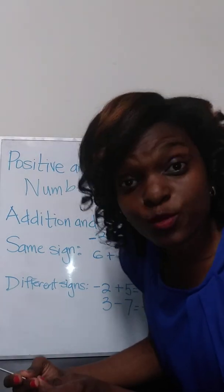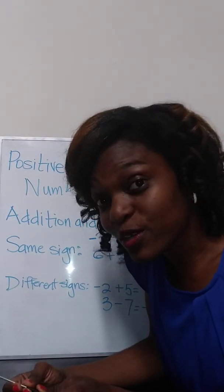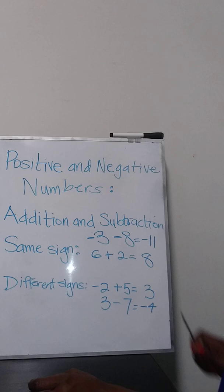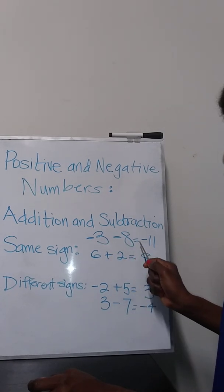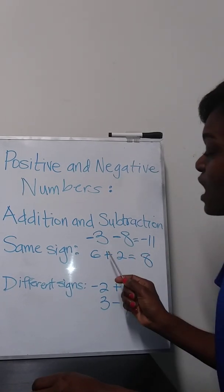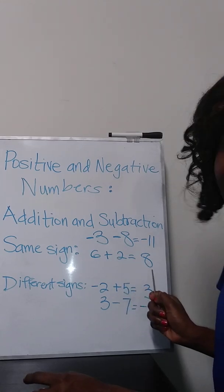If you have two numbers with the same sign, you add the numbers and you keep the sign. Negative 3 minus 8 gives you negative 11. Positive 6 plus 2 gives you 8.